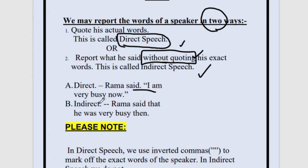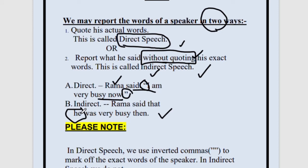Let's see one example. Rama said, 'I am very busy now.' We have the quotations — this is obviously a direct speech because we are directly saying what Rama said. This 'I' does not mean myself; it means Rama. But in the indirect form, how will you say it? 'I' will no more be 'I' — it will be changed to 'he', because Rama is a boy. We are saying: Rama said that he was very busy then. We are not using quotations anymore. Rama said that he was very busy then.